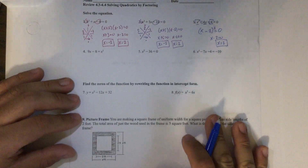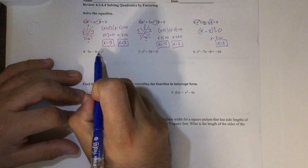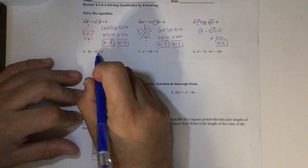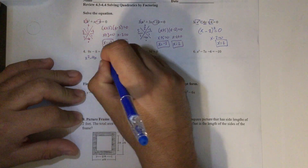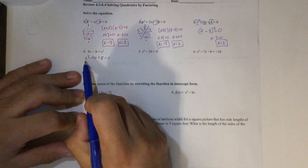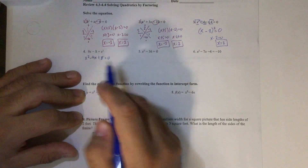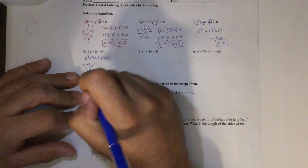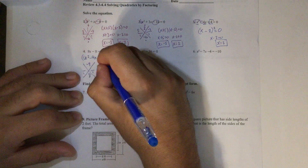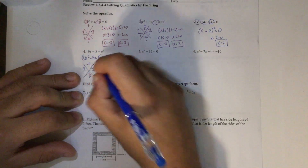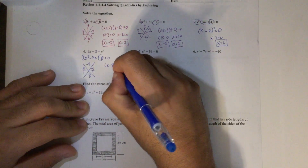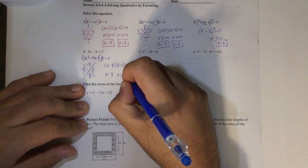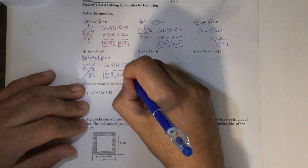On to numbers 4, 5, and 6. Here we want to make sure it's in standard form, set equal to 0. We see 9x and negative 8 need to be moved over, so I'm going to subtract 9x and add the 8. Now it's in standard form. No GCF, not a special case, so we go to the x method. B on top, divide by a, and we multiply a times c — 1 times a is 8. My factors are negative 8 and negative 1, giving x minus 8 and x minus 1. So x equals 8 and x equals 1.